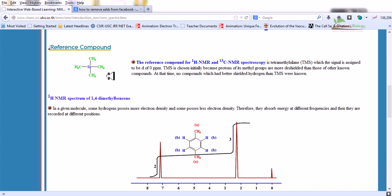The reference compound hugely introduced in NMR spectroscopy is called TMS or tetramethylsilane. Tetramethylsilane gives a signal which is assigned to be 0 PPM. Why? Because TMS was chosen initially as the protons of its methyl groups are more deshielded than those of other known compounds. At that time, no compounds which had better shielded hydrogen than TMS were known. So TMS must give the 0 PPM value for the chemical shift.